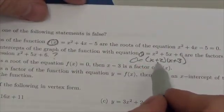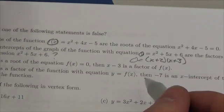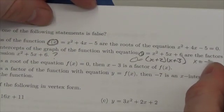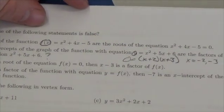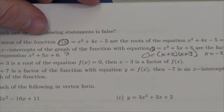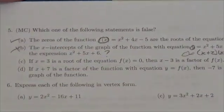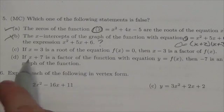But the x-intercepts are going to end up being negative 2 and negative 3. So those are different. So this really is looking like the one that's wrong, but let's keep looking just to make sure that we're not missing something.